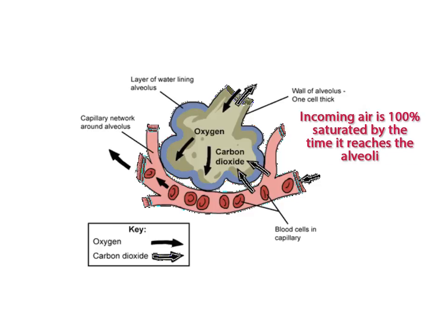And finally, one of the functions of the mucus membranes lining the respiratory tract is to increase the humidity of incoming air. Moist air prevents the alveoli from drying out, and moist tissue is essential for maximum diffusion.